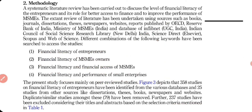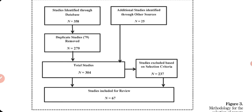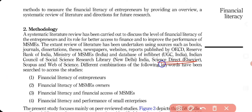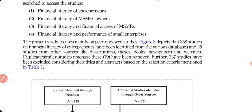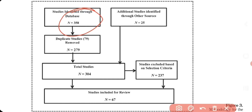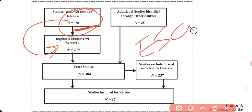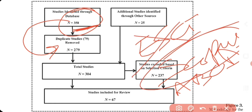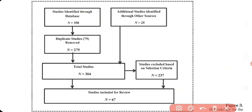I made a protocol showing how I selected my studies. From databases like ScienceDirect, Scopus, and Web of Science, the initial number of papers came to 358. I then removed duplicate studies — for example, a paper can be indexed in both ESCI and Scopus, so I selected only one source (Scopus) and deleted duplicates from other databases, leaving 279 papers.